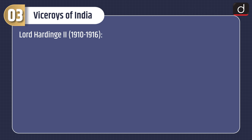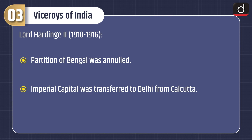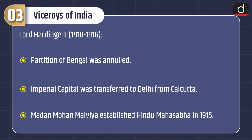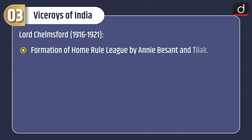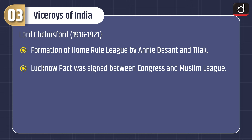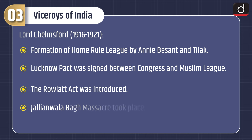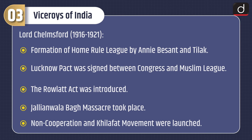Lord Hardinge II, 1910–1916: the partition of Bengal was annulled. The imperial capital was transferred to Delhi from Calcutta. Madan Mohan Malaviya established the Hindu Mahasabha in 1915. Lord Chelmsford, 1916–1921: formation of the Home Rule League by Annie Besant and Tilak. The Lucknow Pact was signed between Congress and the Muslim League. The Rowlatt Act was introduced. The Jallianwala Bagh massacre took place. Non-cooperation and Khilafat movements were launched.